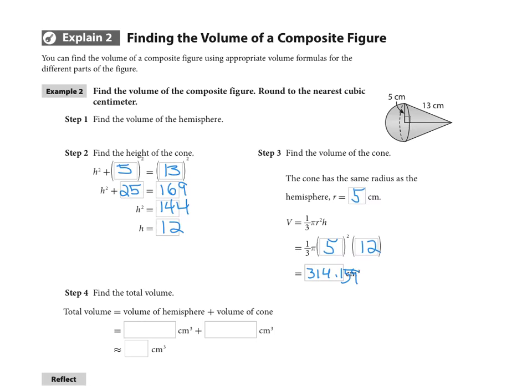Now to that, to find the total volume, we need to add the volume of the hemisphere. So that's back here in step one. The volume of the hemisphere is actually, instead of 4 thirds, which is the whole sphere, we're just going to do 2 thirds pi r cubed. So in this case,